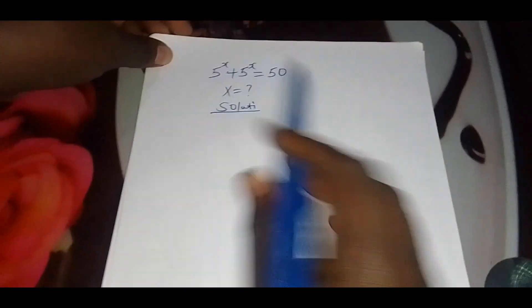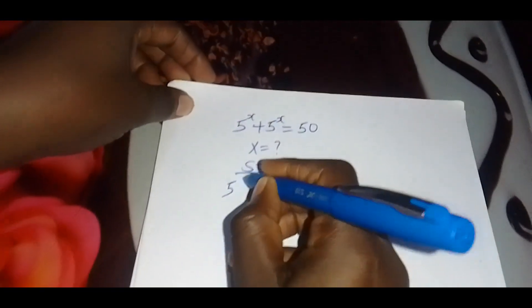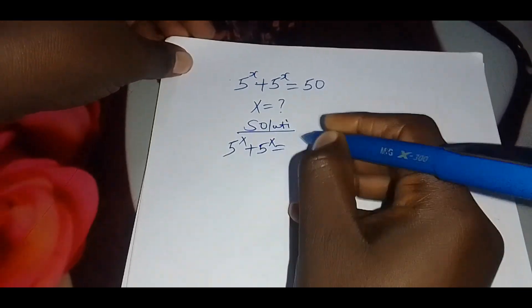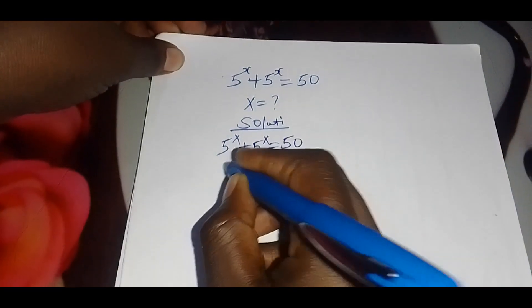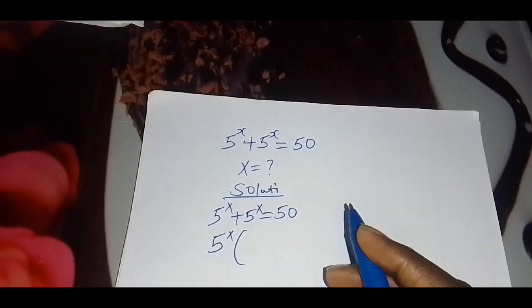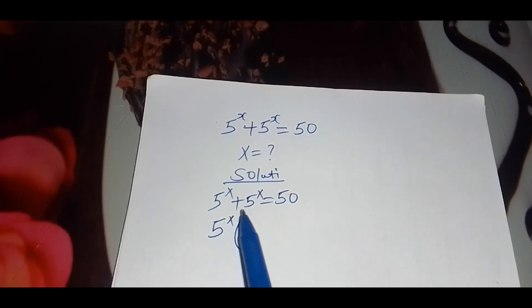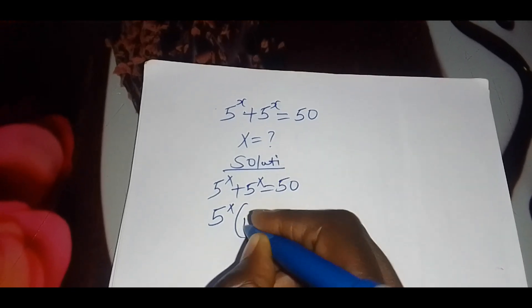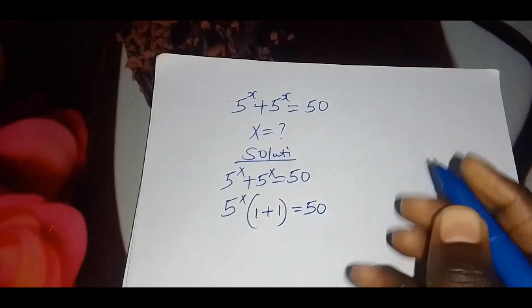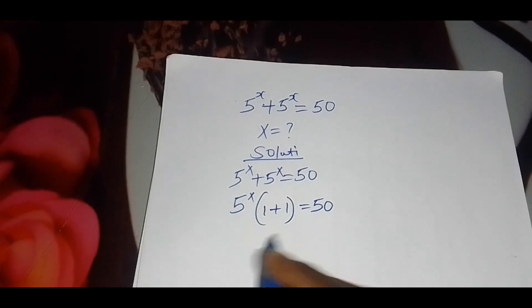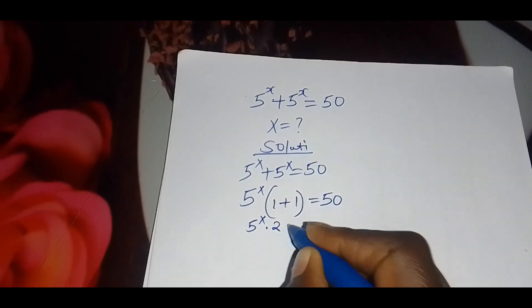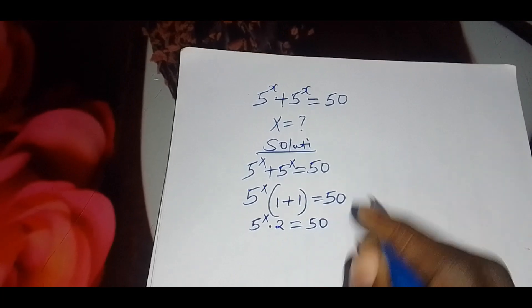We can rewrite 5 raised to the power x plus 5 raised to the power x equals 50 as follows. Since 5 raised to the power x is common, we can factor it out, giving us 5 raised to the power x multiplied by 1 plus 1, which equals 50. So 1 plus 1 is 2, giving us 5 raised to the power x multiplied by 2 equals 50.